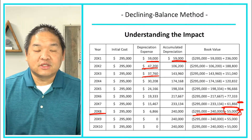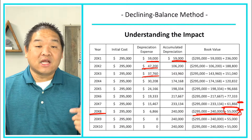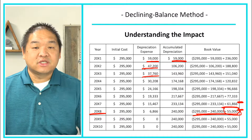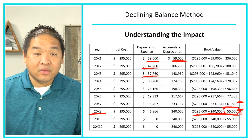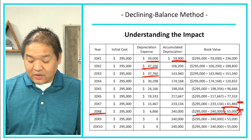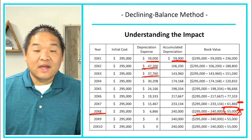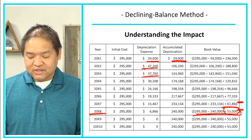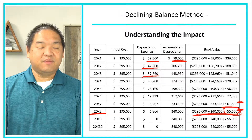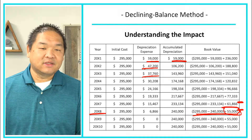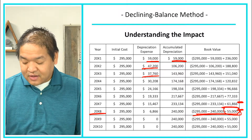Years 9 and 10 have no depreciation expense because we've already accelerated all the depreciation into years one through eight. We just leave the book value as-is at residual value for those remaining years.